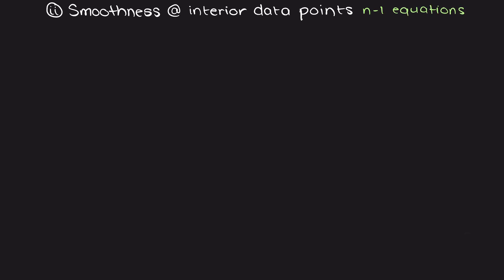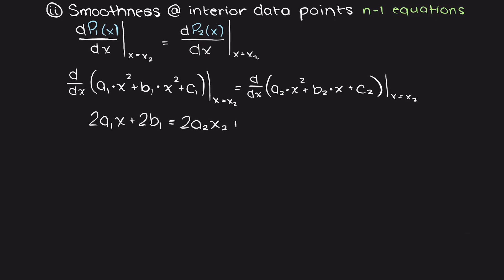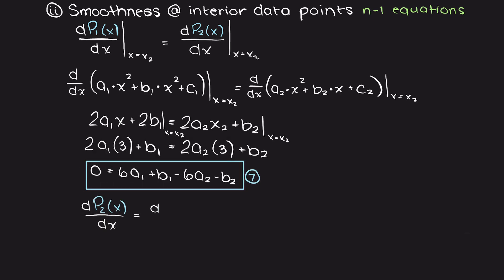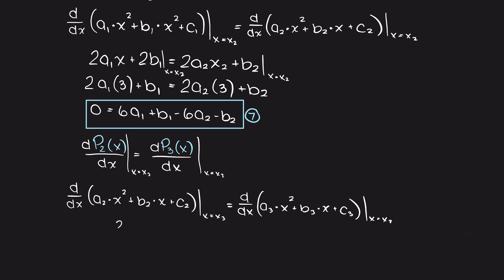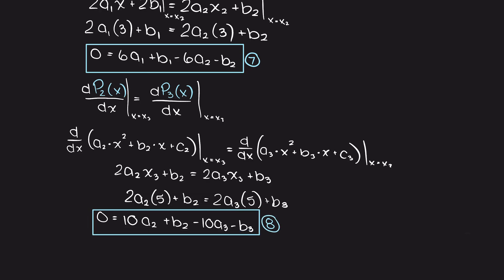As we learned in our quadratic interpolation theory video, we can find n-1 equations through the property of smoothness at our interior data points, which in this example gives us 2 more equations. To find these, we evaluate the derivatives at their shared x value. We take the derivatives of p1 and p2 evaluated at x2, and then repeat this for p2 and p3 evaluated at x3. This results in 8 equations, but we are still missing one equation to solve for our 9 unknowns.